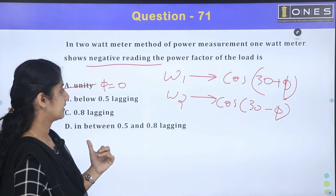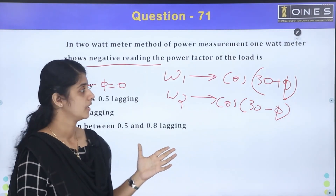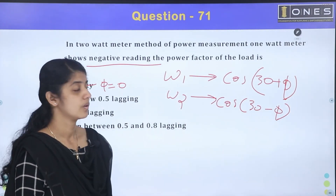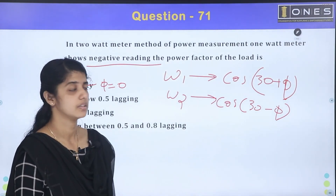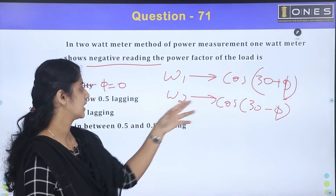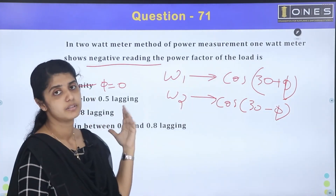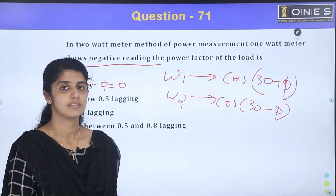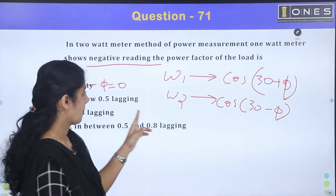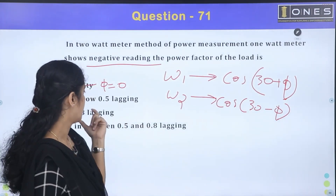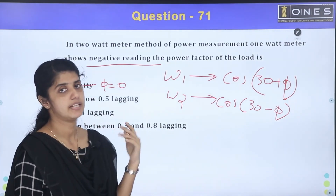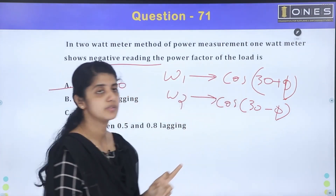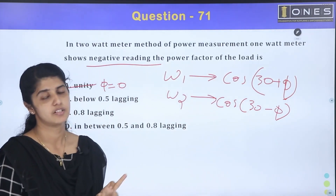Then 0.8 lagging — let's check. We need to check the cos 30° value, which is 0.866. If we consider φ such that cos φ equals 0.8, then 30° + φ is less than 90°, so cos(30° + φ) is still positive. So W1 is not negative in this case.